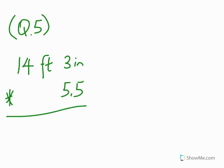Question 5: 14 feet 3 inches times 5.5. They give this in decimal, so we have to give it back in decimal. If we multiply and it doesn't give us a whole number then we give it in decimal; if it gives us a whole number we write the whole number, unless otherwise stated. We do 3 inches times 5.5.